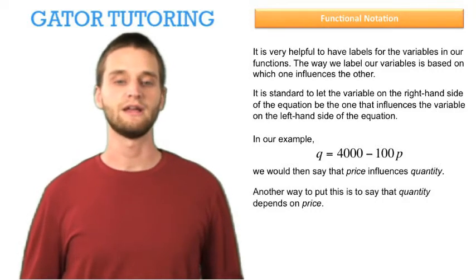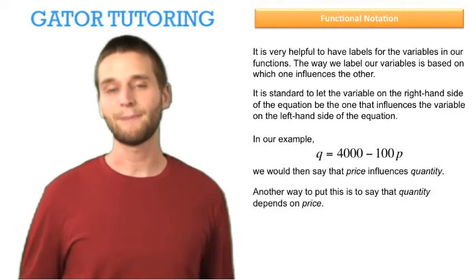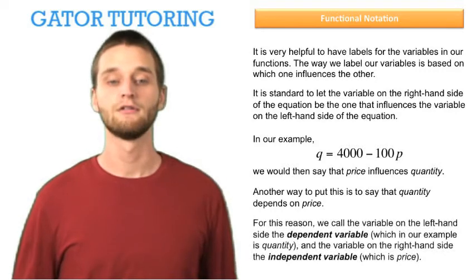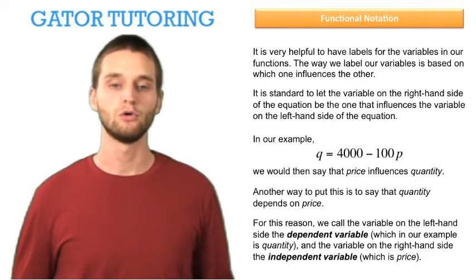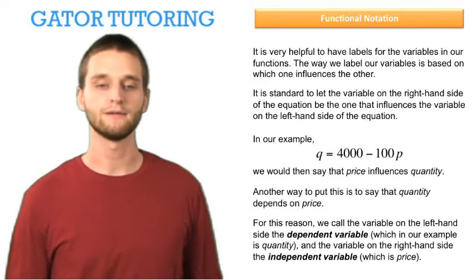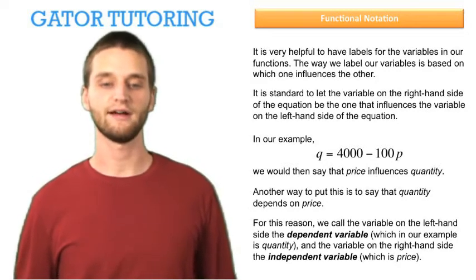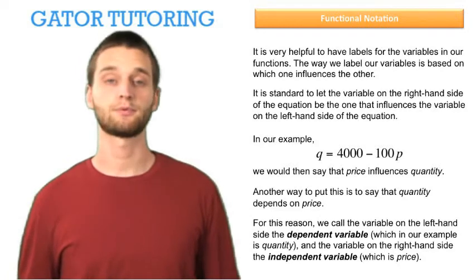Another way to put this is to say that quantity depends on price. For this reason, we call the variable on the left-hand side the dependent variable, which in our example is quantity, and the variable on the right-hand side the independent variable, which is price in our example.